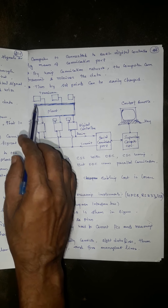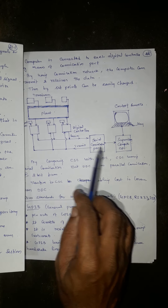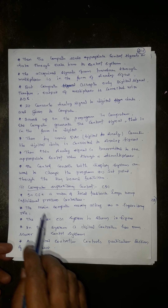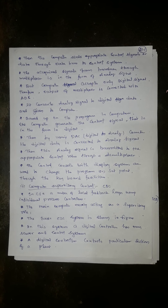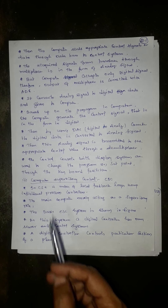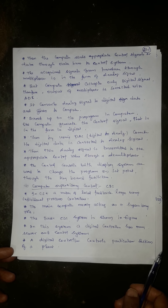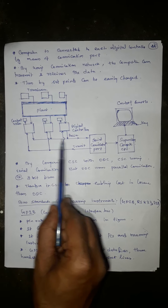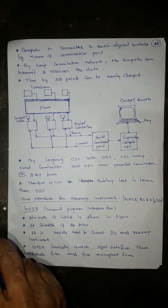In CSE, each digital controller has its own transducer and control system, including a control valve or solenoid valve. Each control box manages a particular section of the plant and is connected to the supervisor computer through a serial communication port. By using a communication network, the computer can transmit and receive data. The main computer merely acts in a supervisory role, while set points can be changed using the console and programming keyboard.